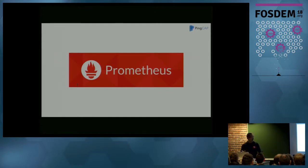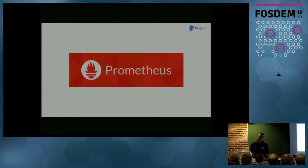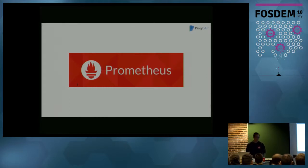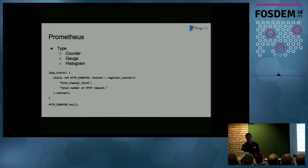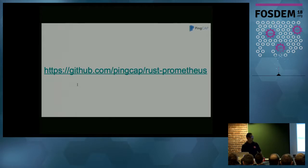The database is taking shape, but another thing is: how can we guarantee our database is working well? We can use monitoring. Currently Prometheus is the most famous monitoring system, so we decided to use it. Prometheus provides four metric types: counter, gauge, histogram, and summary — we mostly use the first three. Here's a simple example: you can use a registered counter, get a Prometheus counter, and increment it. We also built our own Prometheus client in Rust — you can try it, and it is referenced in the official Prometheus documentation.